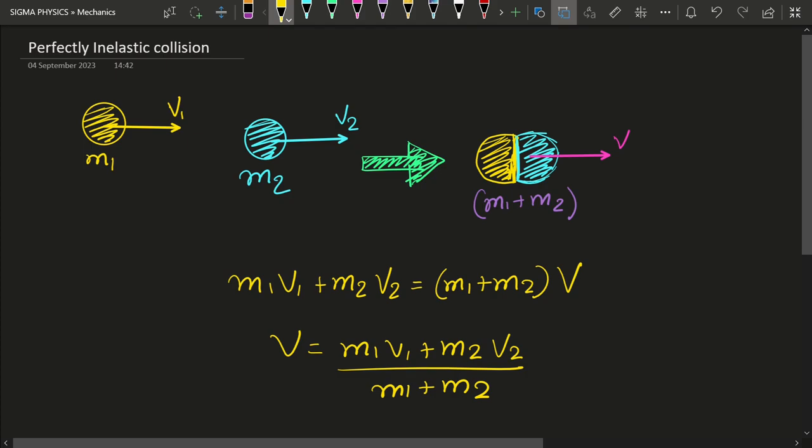we can find the loss in kinetic energy of these bodies by subtracting the kinetic energy of the final body, which is M1 plus M2, from the kinetic energies of M1 and M2, the initial kinetic energies of M1 and M2.